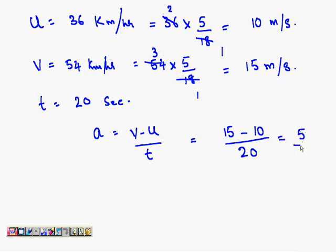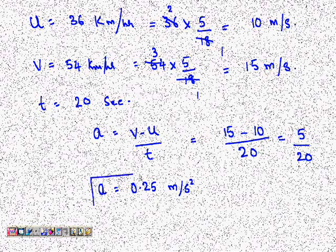15 minus 10 is 5 divided by 20. This will be 5 by 20, if you divide this you get 0.25 meters per second squared. This is your final answer.